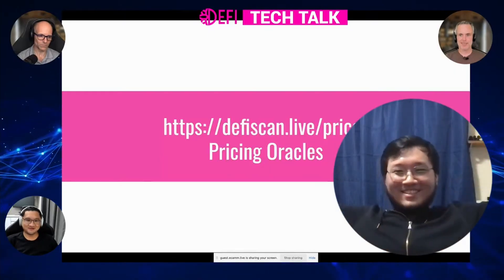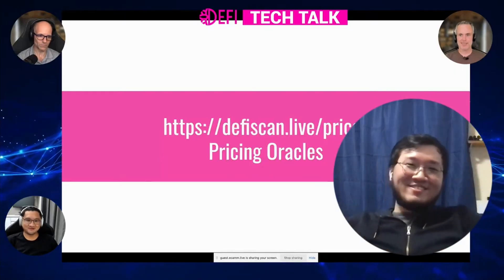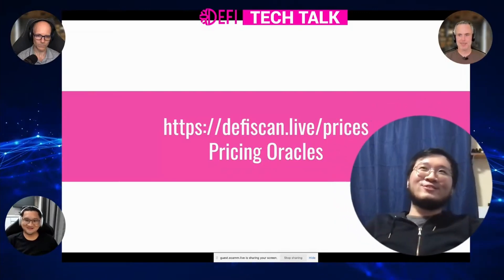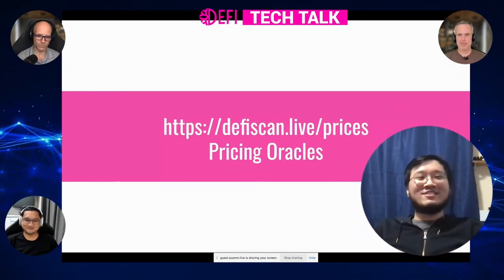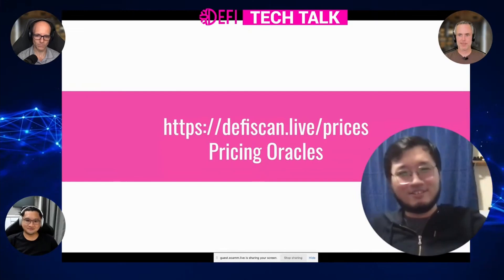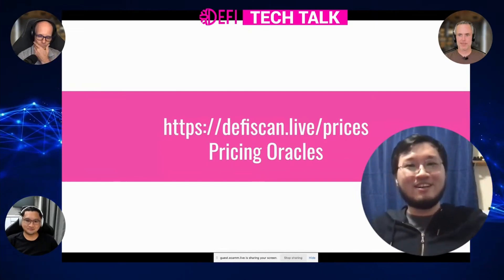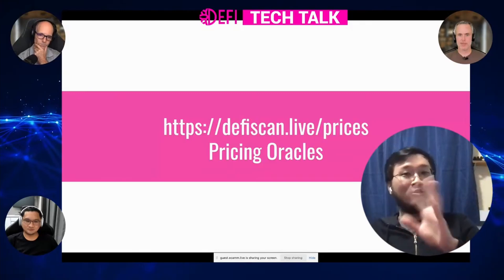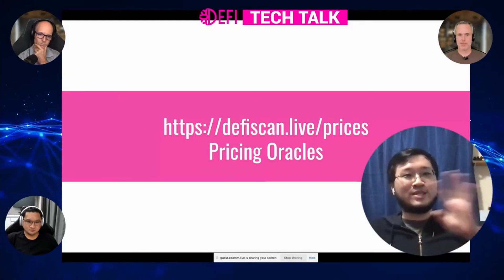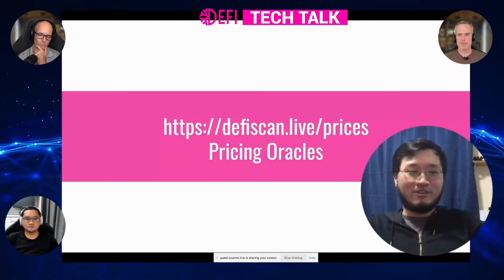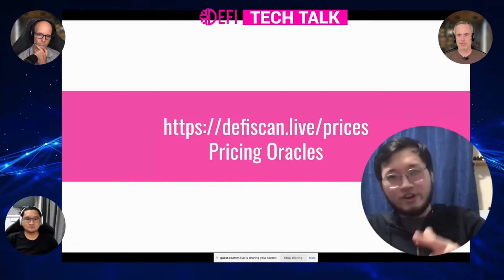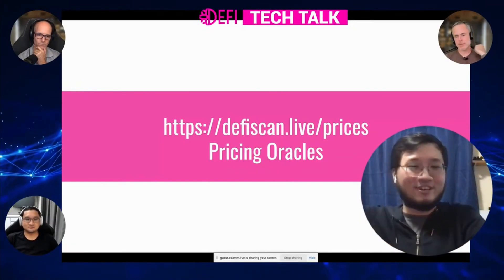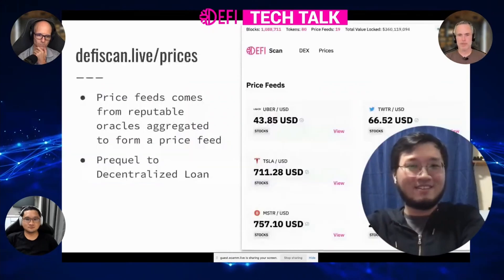The next part: pricing oracle. So the prequel to decentralize, taking out decentralized nodes. DeFi Scan and the DeFi Wallet that we talk about uses a new ocean infrastructure — basically the blazing fast ocean infrastructure. Everything refreshes as fast as your computer can handle it, basically how fast your internet is, how fast you refresh.